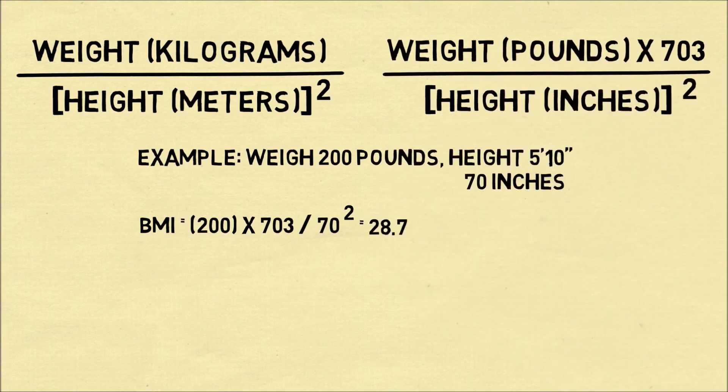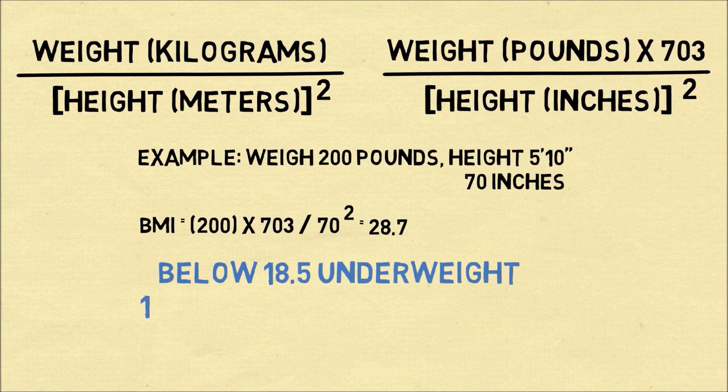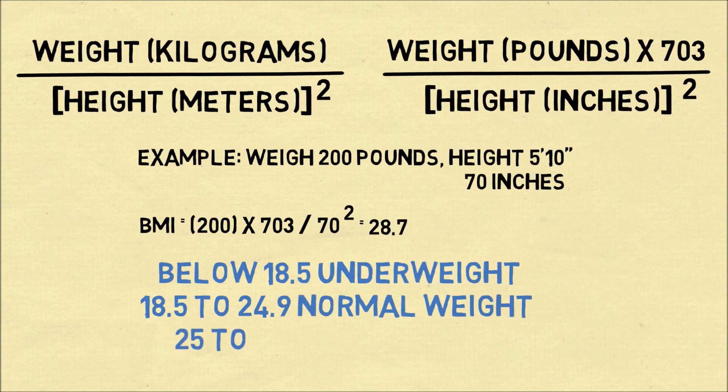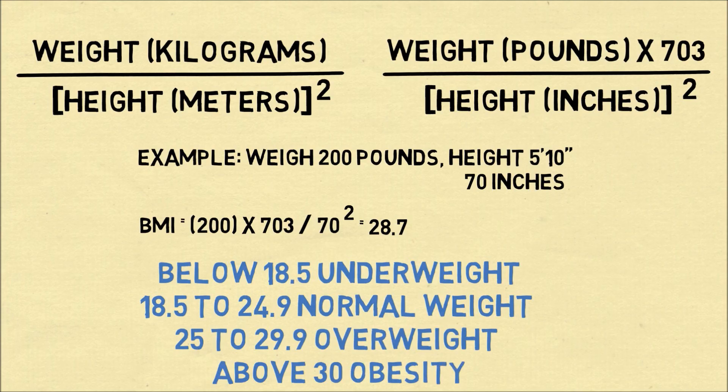To make sense of this number, we look at the different ranges. Below 18 is considered underweight, 18.5 to 24.9 is considered normal weight, 25 to 29.9 is overweight, and above 30 is considered the definition for obesity. So a BMI of 28.7 is in the range of overweight.